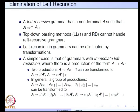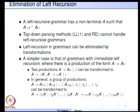Our LL1 parsing method and the recursive descent parsing method cannot handle left recursive grammars. Left recursion in grammars can be eliminated — in other words, we can convert left recursion to right recursion, and similarly right recursion can be converted to left recursion.